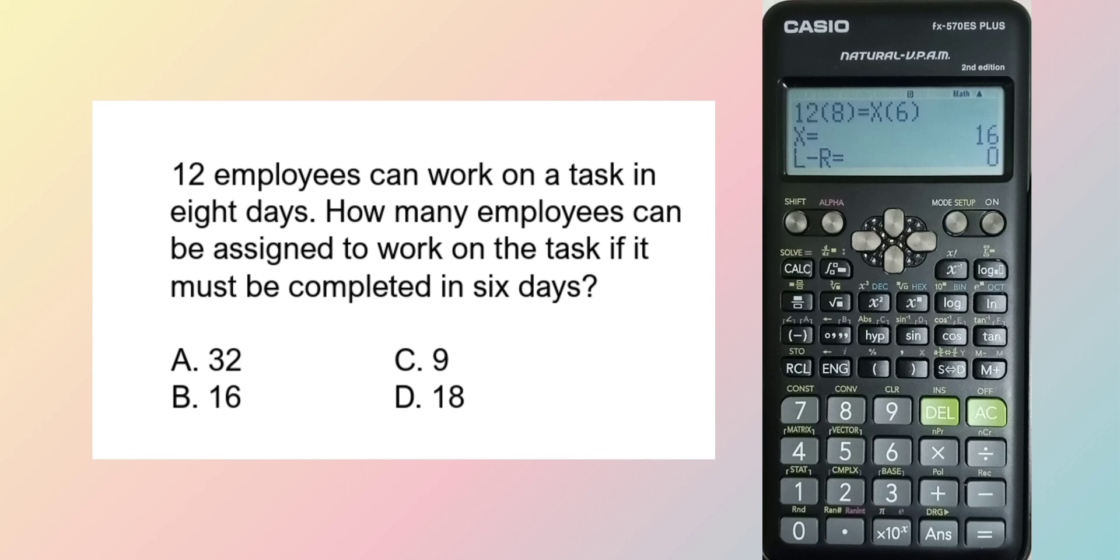Direct proportion has mutual behavior. Meaning, when one increases, the other also increases. And their quotient is constant. Remember, quotient is constant in direct proportion.